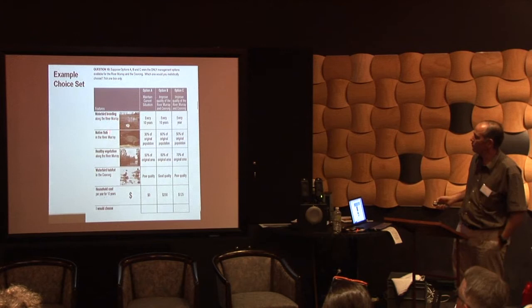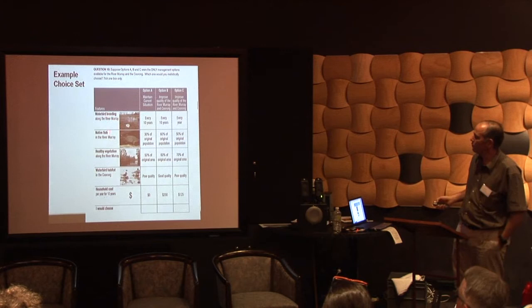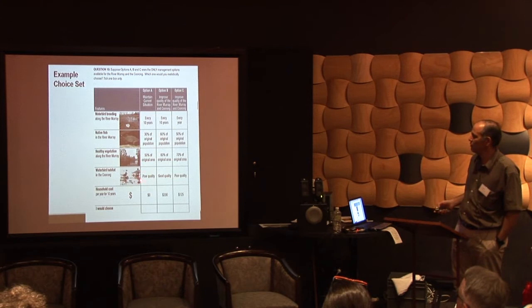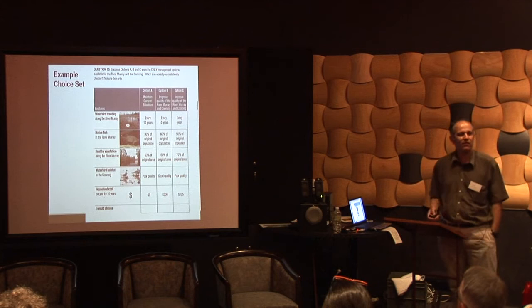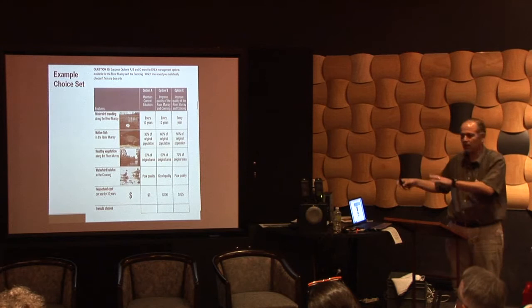Here we can see an example for the River Murray and the Coorong, with attributes including waterbird breeding, fish, vegetation, and waterbird habitat. People could maintain the current situation — breeding not very often, not many fish, vegetation at half the original area, Coorong in poor condition — at no cost. Or they could choose to improve the Coorong and the Murray: breeding every year, fish up from 30 to 50 percent, vegetation from 50 to 70 percent, at a cost of $125 over 10 years. We show people many different alternatives, mix them up, and figure out how much people value each attribute — much like sitting at the car auction.